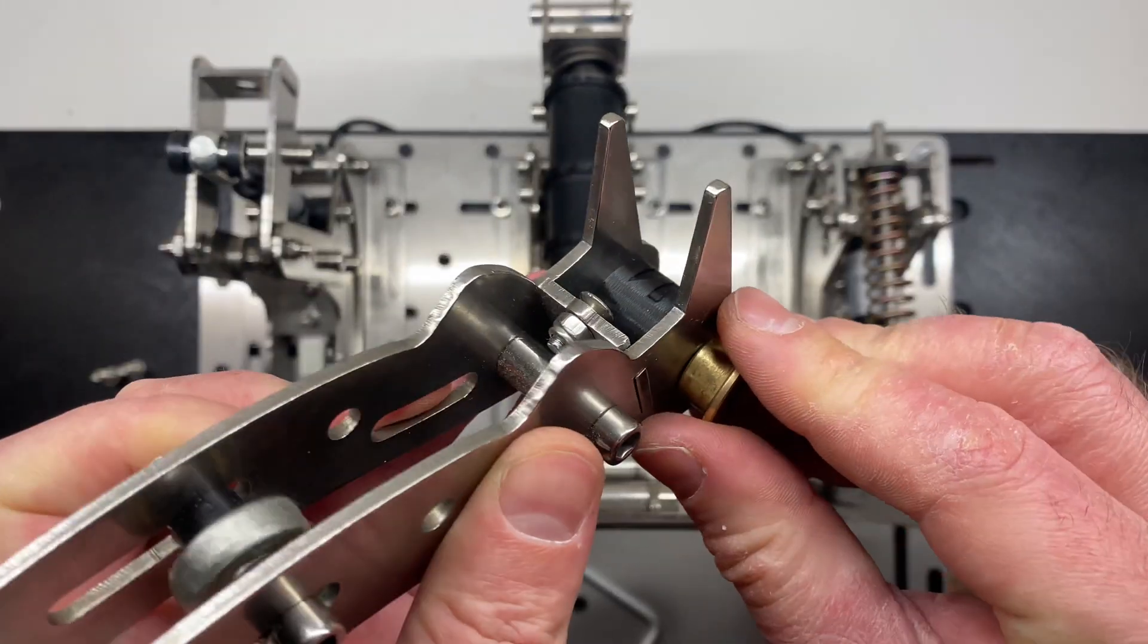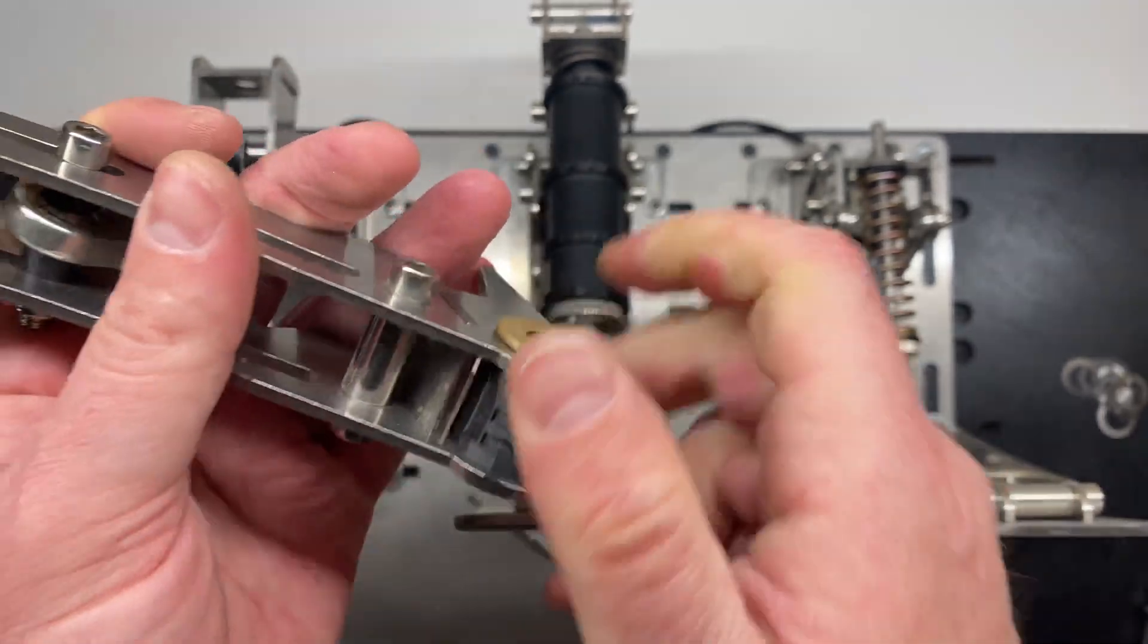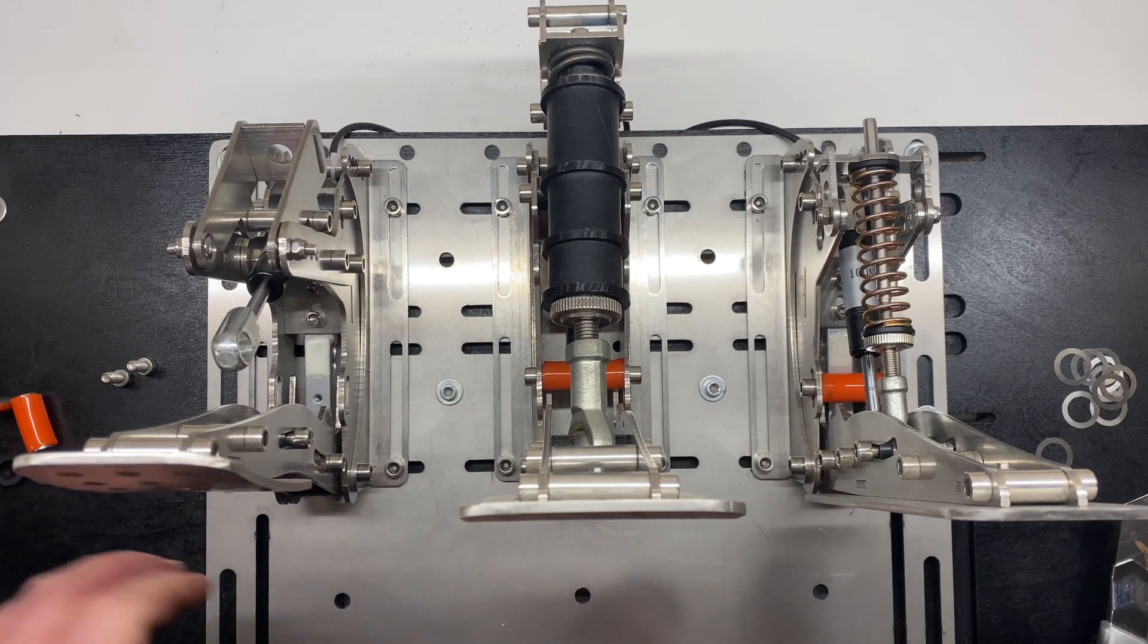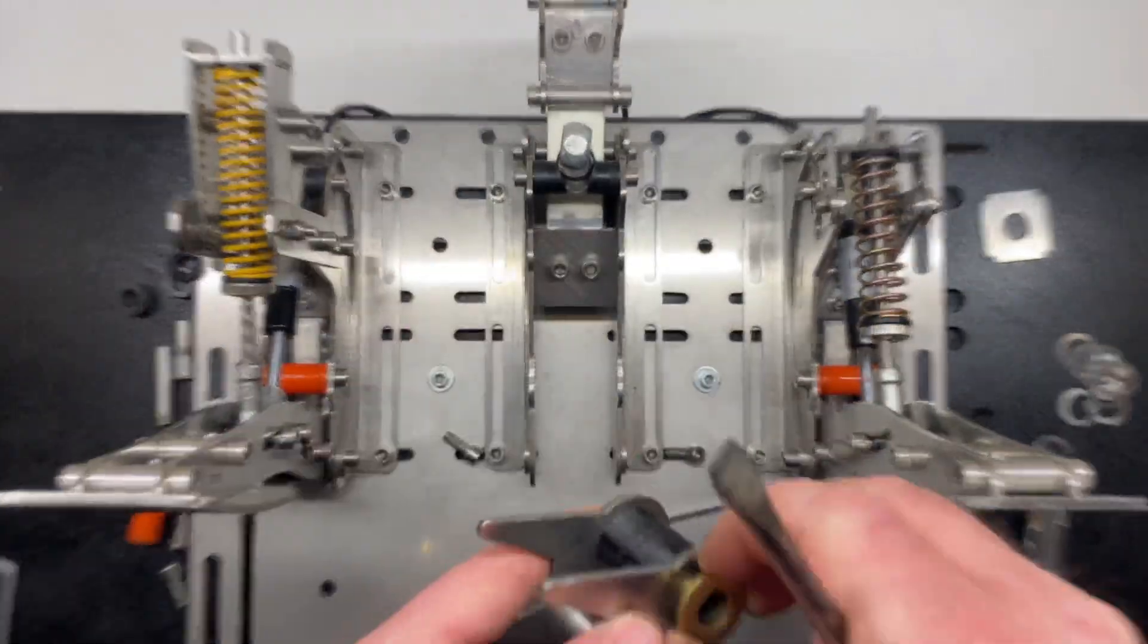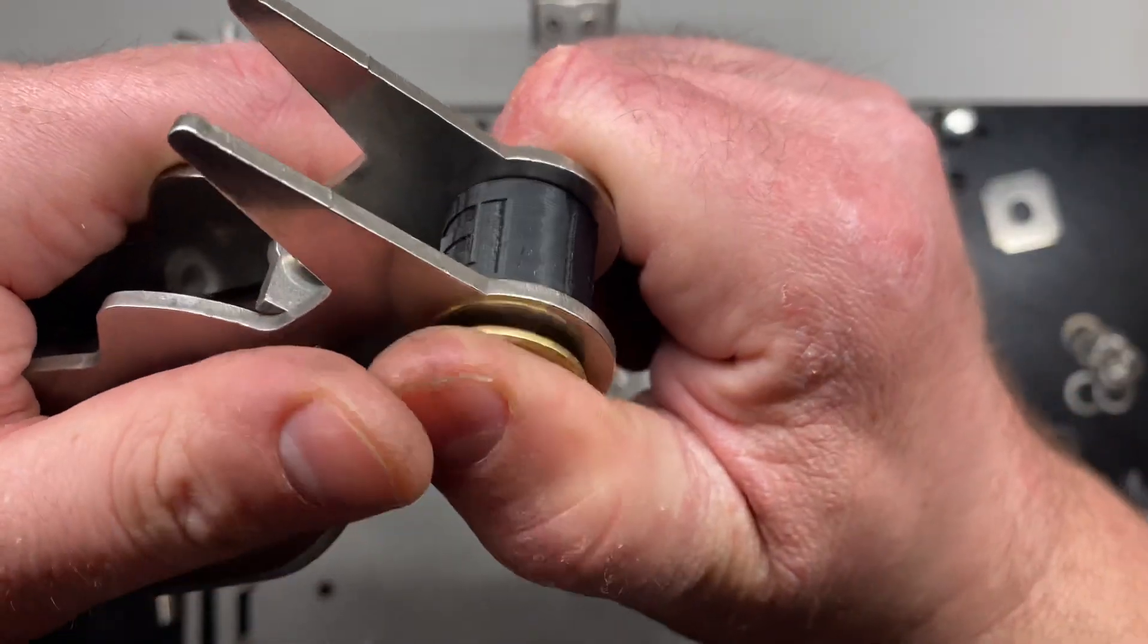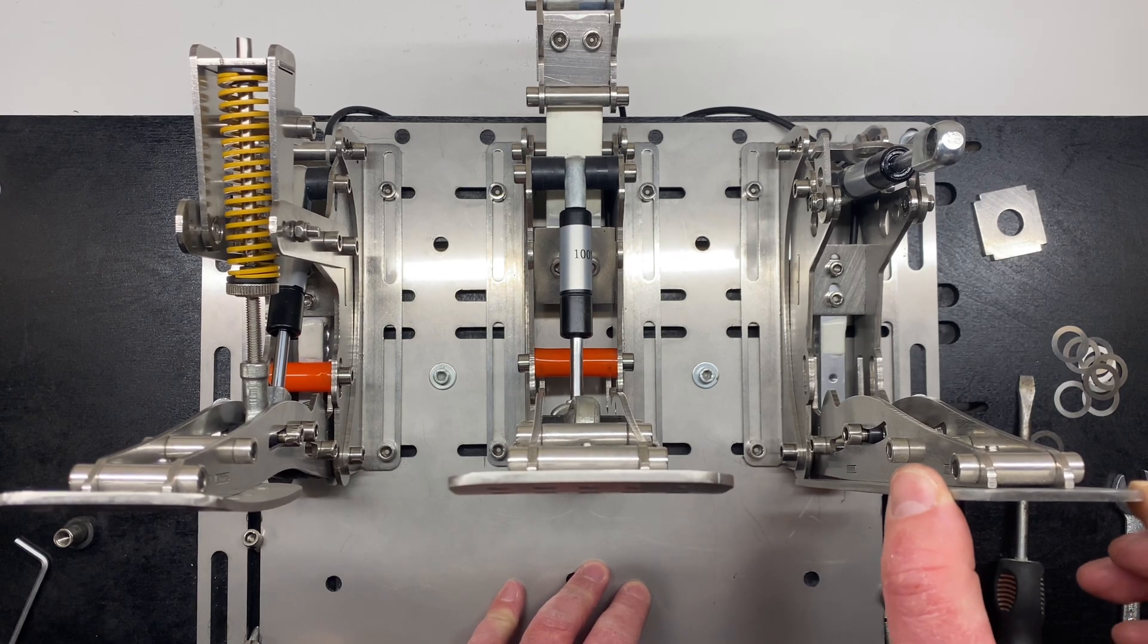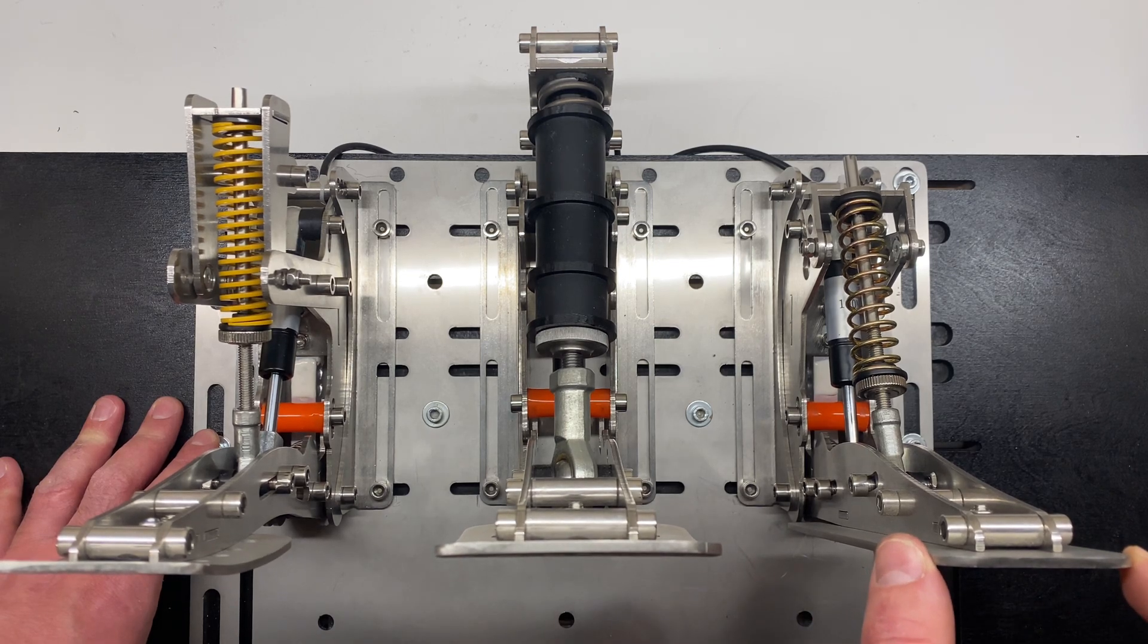In my case, washers with a thickness of 0.2mm worked well, but it is also a good idea to get thicknesses of 0.1mm and 0.3mm. I will place it on the back of the sliders. As you can see, the problem is solved. No side movement.